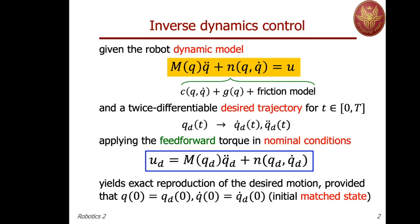If we want to reproduce this trajectory, we design a feedforward torque which, in nominal conditions assuming perfect knowledge of all dynamic terms M and N, yields exact reproduction of the desired motion. However, this requires that the actual initial state of the robot — configuration and velocity at time zero — be matched with the desired trajectory. This computation is purely algebraic and can be implemented using Newton-Euler, but it has some drawbacks.